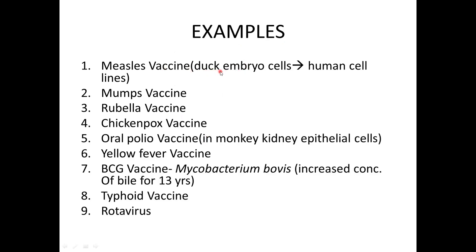Examples of attenuated vaccines: the measles vaccine is attenuated by growing on duck embryo cells first, then passaging on human cell lines. The mumps vaccine, rubella, chickenpox, and oral polio vaccine (Sabin) are attenuated by growing on monkey kidney epithelial cells. The yellow fever vaccine is another example. BCG is the strain of Mycobacterium bovis attenuated by growing in high bile concentration for 13 years. Typhoid and rotavirus vaccines are also attenuated.